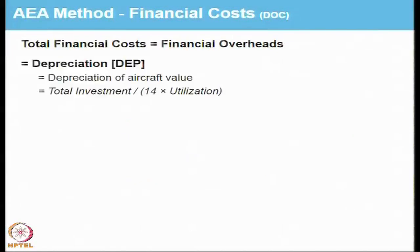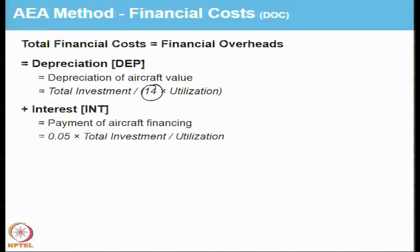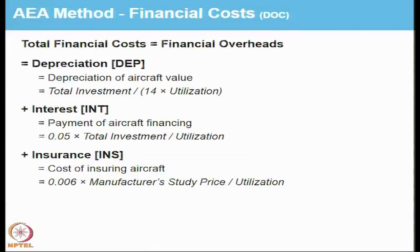The total financial costs are the financial overheads. Depreciation is the first component, using a straight-line depreciation formula. The aircraft has a life of approximately 14 years, so the total investment is recovered over 14 years, divided by the annual utilization estimated earlier. Towards financing, 5 percent of the total investment per utilization is paid towards interest, and 0.6 percent towards the cost of insuring the aircraft.